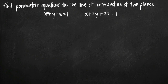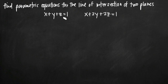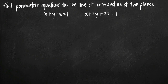In order to find those parametric equations, we need two things: the cross product of the normal vectors of each of these planes, and a point on the line. So the first thing we need to do is find the normal vector to each of these planes, and the way that we do that is by taking the coefficients on the x, y, and z terms and combining them to form the components of the normal vector.